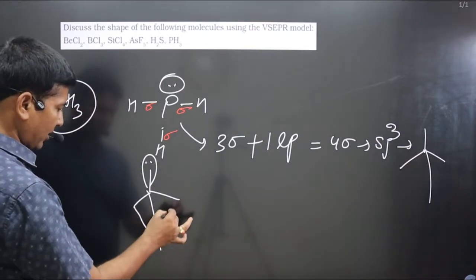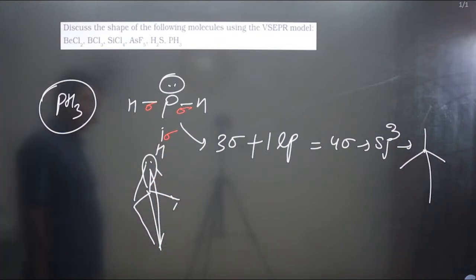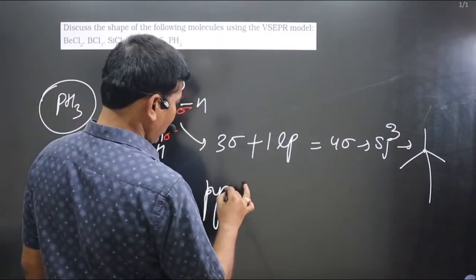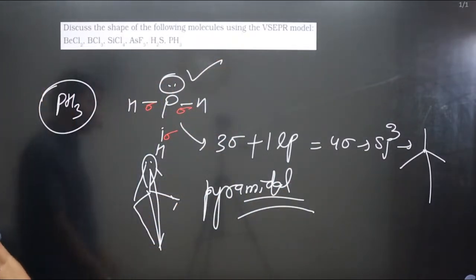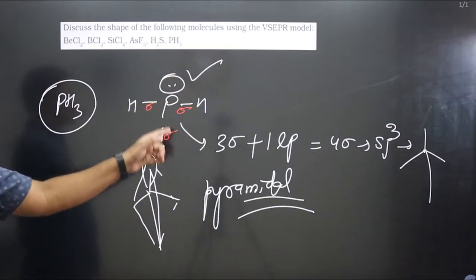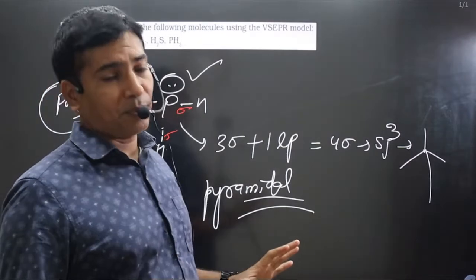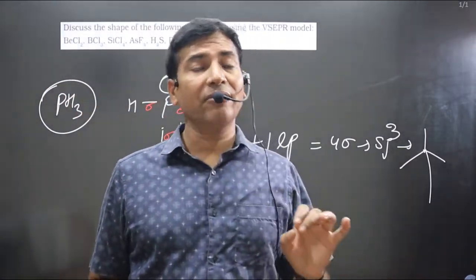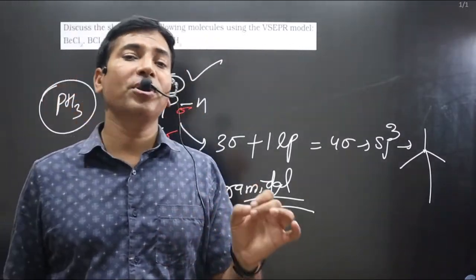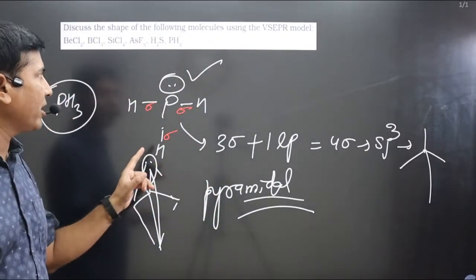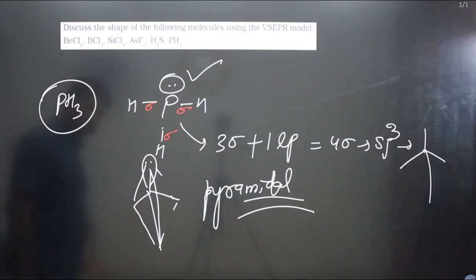If we place the one lone pair in the tetrahedral arrangement and hide that portion, the geometry we see is pyramidal. So the shape of PH₃ is pyramidal because of the lone pair on the central element. This illustrates the key lesson: if the central element possesses lone pairs, the shape changes due to lone pair–bond pair repulsion.